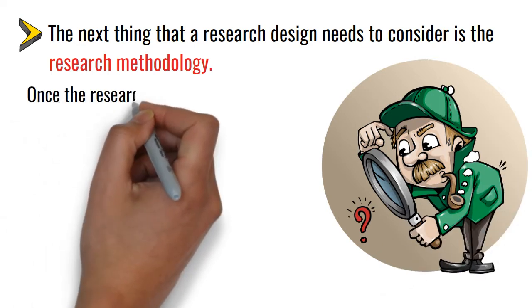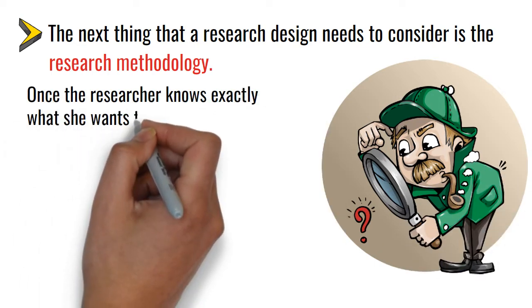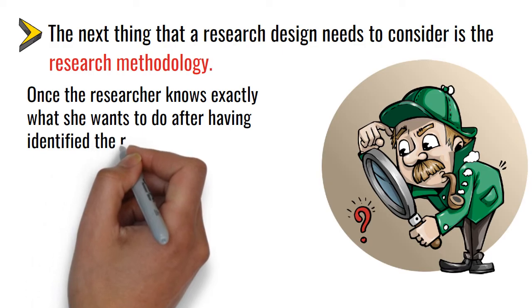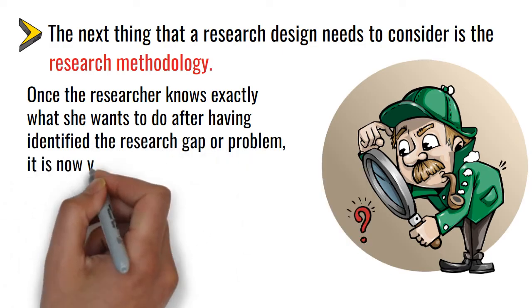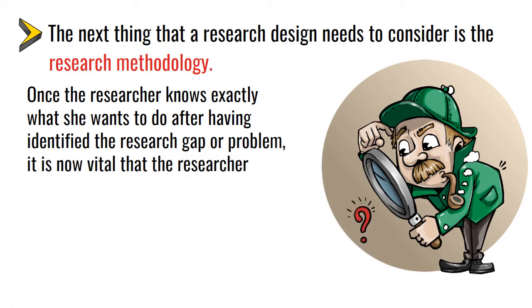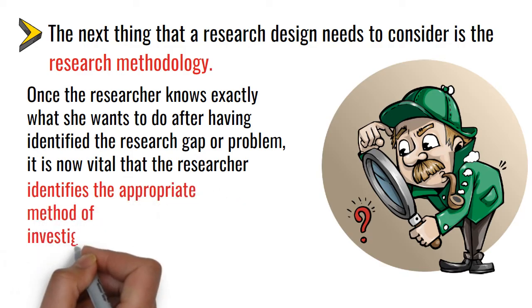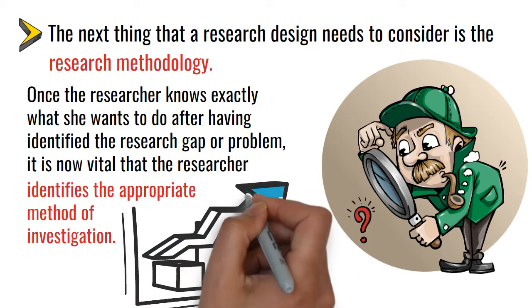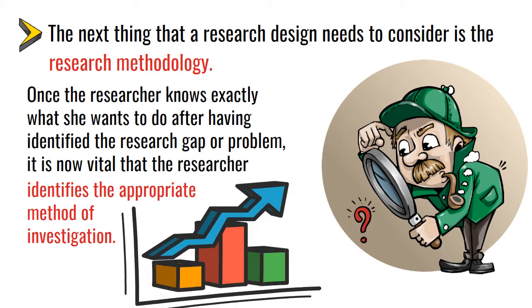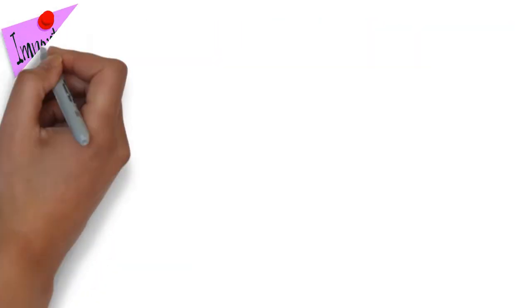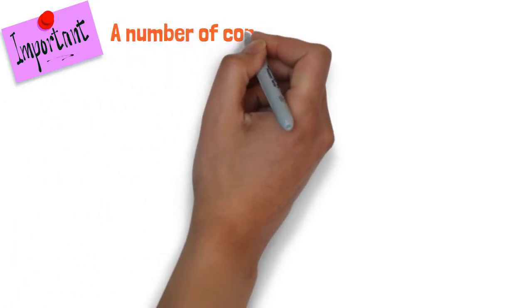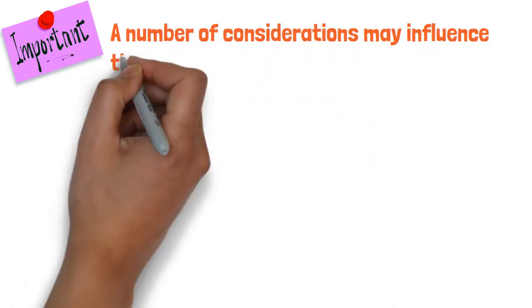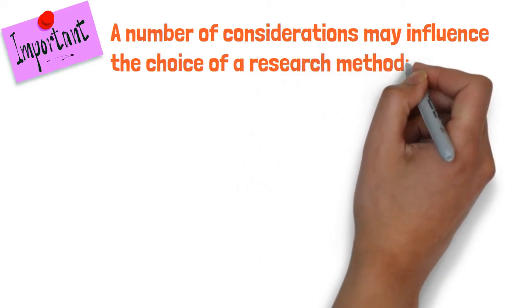Once the researcher knows exactly what she wants to do after having identified the research gap or problem, it is now vital that the researcher identifies the appropriate method of investigation that will yield the desired data necessary for the attainment of the objectives of the study. It must be noted that a number of considerations may influence the choice of a research method.